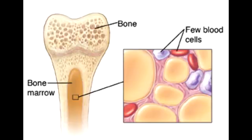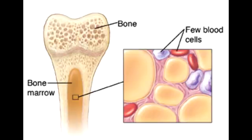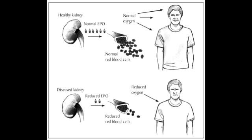To treat aplastic anemia, first you would have to get rid of the causative agent — for example, if drugs are causing it, get the patient off those drugs. Then you could proceed with immunosuppressive regimens such as antithymocyte globulins or cyclosporin. Other options include allogenic bone marrow transplantation, RBC and platelet transfusion, and treatment with G-CSF (granulocyte colony stimulating factor) or GM-CSF (granulocyte macrophage colony stimulating factor).